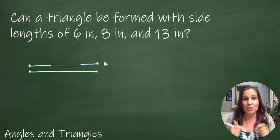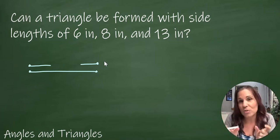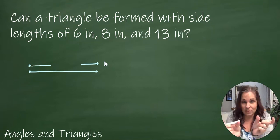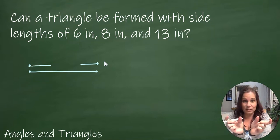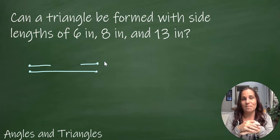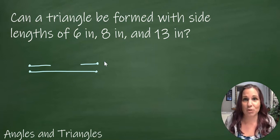So if the two shorter sides added together, their length together, is still shorter than the third side, we can't make a triangle.